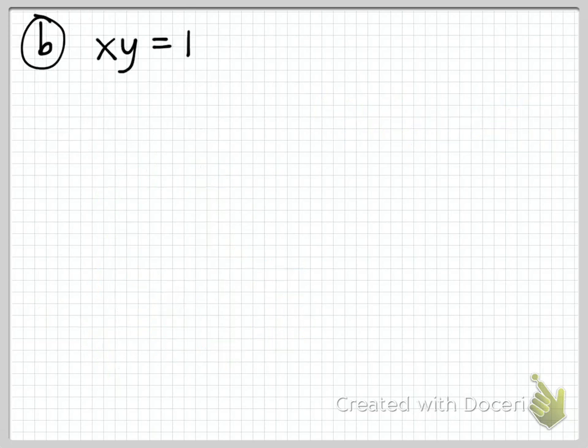The next way we're going to find y prime is by leaving the equation in its original form. Recall from part A that if we could solve for y, we'd get y as a function of x. We won't always be able to do that, but conceptually, y equals some function of x — that is, y equals y of x.